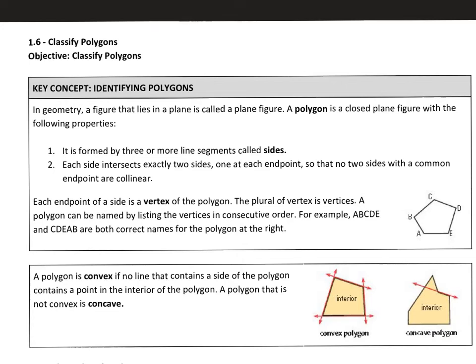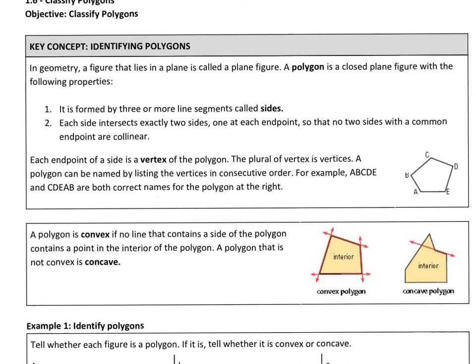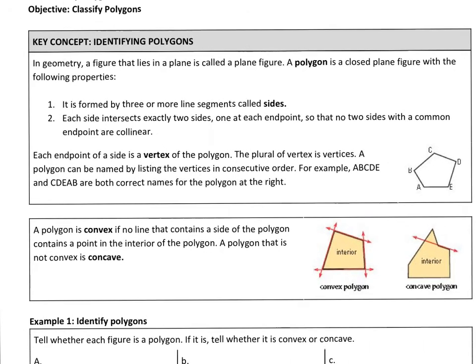Okay, so lesson six: classifying polygons. First we're going to define polygons and then talk about how to classify them. So a polygon - I'm going to read this definition kind of word for word and then throw in my own explanation of it.